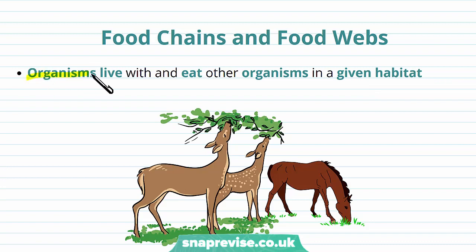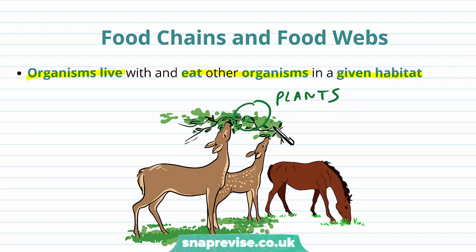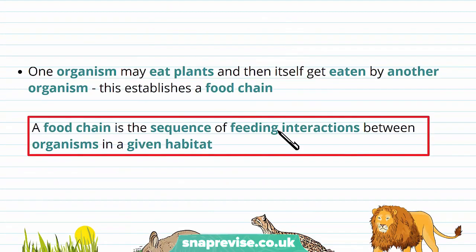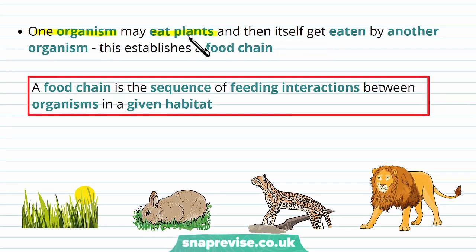Normally when we have organisms living in the same area, there tends to be organisms which eat other organisms within this given habitat. For example, plants tend to be eaten by herbivores, and so we have a group of organisms eating another group of organisms. One organism may eat plants, for example grass or tree leaves, and then itself might get eaten by another organism, which would be a carnivore. And this relationship of eating and being eaten establishes what we call a food chain.